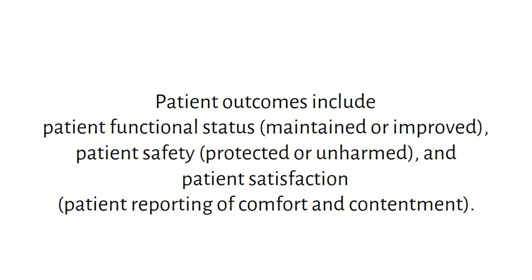Process and outcome indicators are the two indicators used to identify the area for improvement. These two indicators are considered very important, and the auditor must determine which kind of indicator to select for their audit — whether it will be the process through which the patient receives health treatment, or the outcome after the patient has received care.